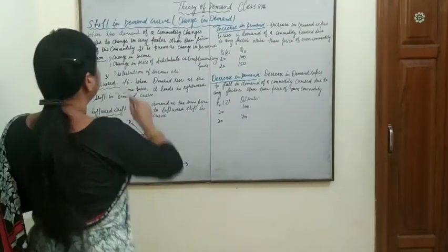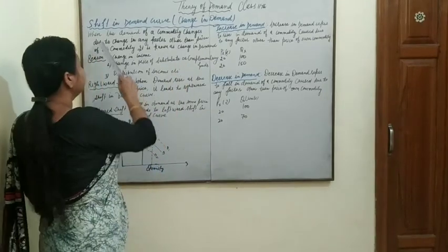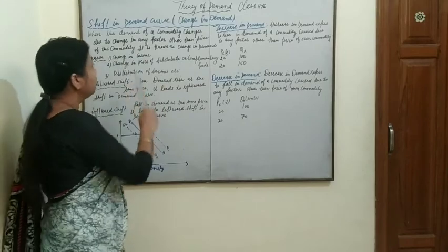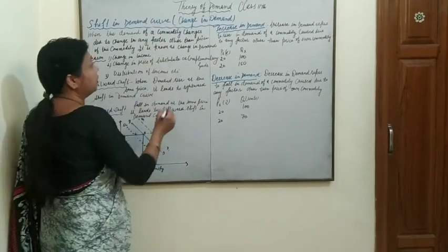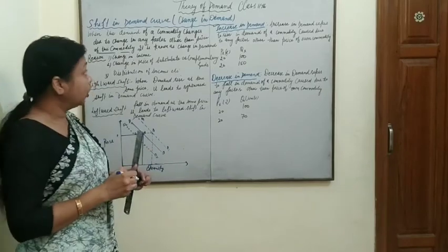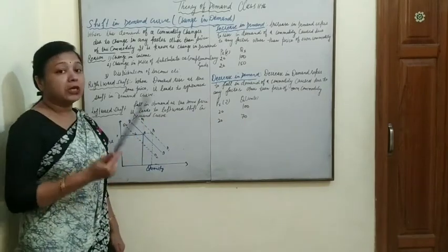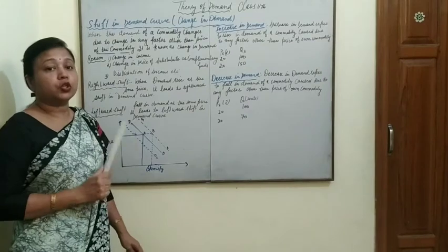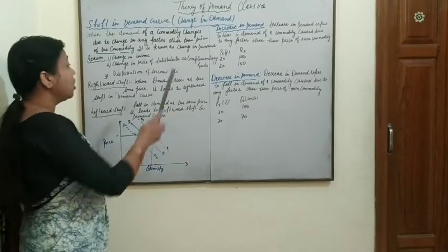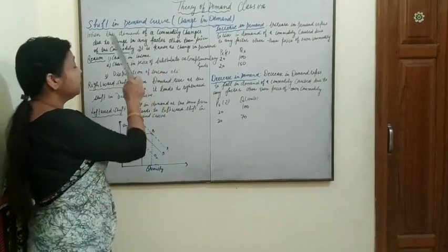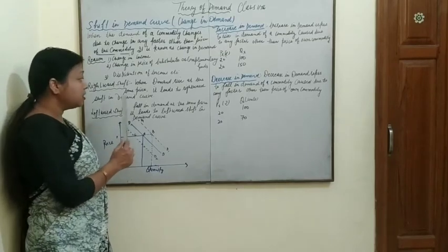Next is shift in demand curve, also known as change in demand. When demand of a commodity changes due to change in any other factor other than the price of the own commodity, it is known as change in demand. Reasons include changes in income of the consumer, price of substitute or complementary goods, taste and preference, distribution of income, and expectations. All these factors affect demand and cause the demand curve to shift.